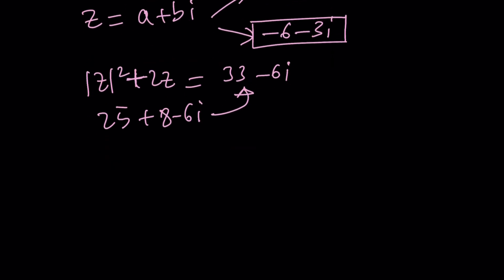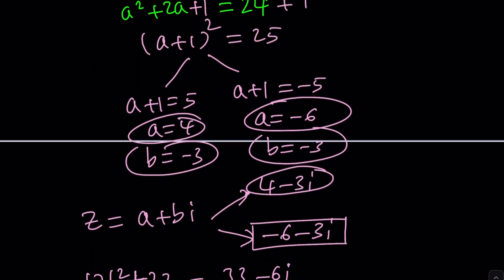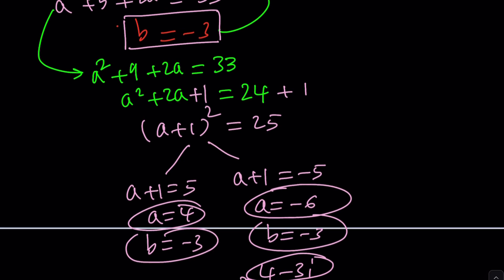What about this one? The absolute value looks like a radical, doesn't it? Well, the absolute value is going to be 36 plus 9, which is square root of 45. But we're going to square it and add 2 times the number. This will be 45 minus 12 minus 6i. Again, 33 minus 6i. Yay! Our solutions work. Are there any other solutions? Nope. If we did, they would come up.